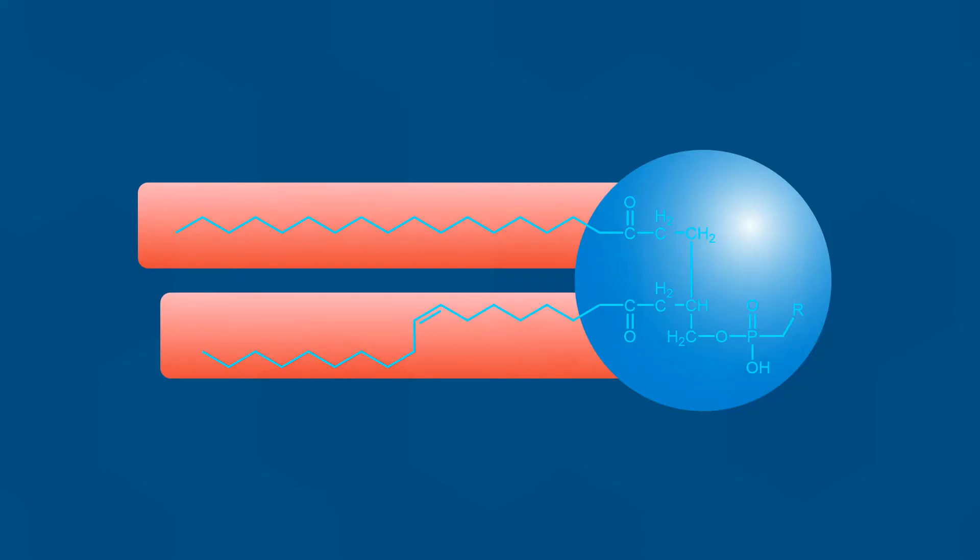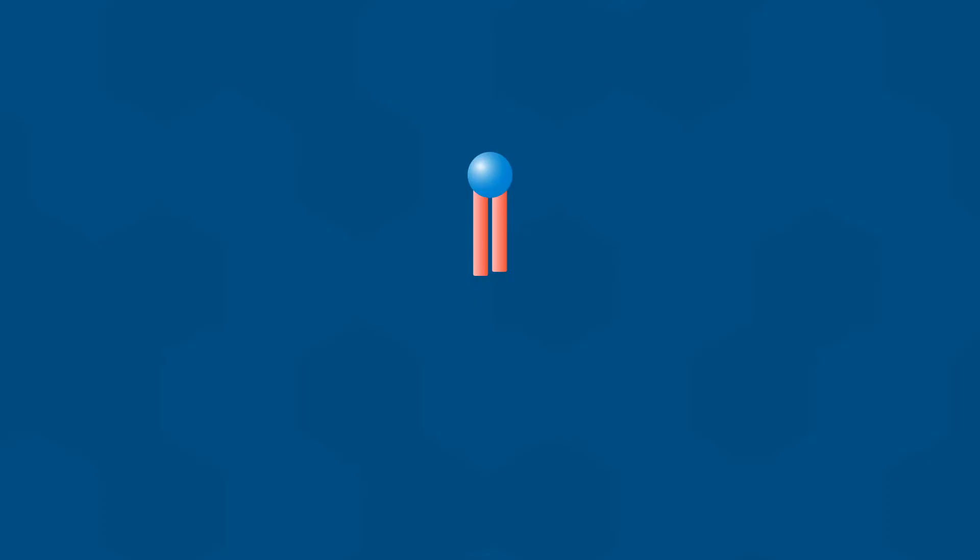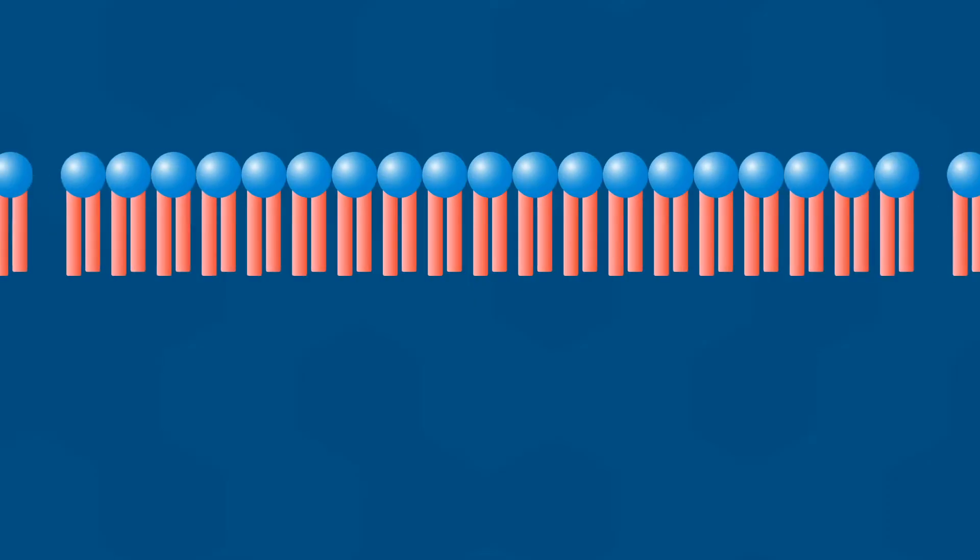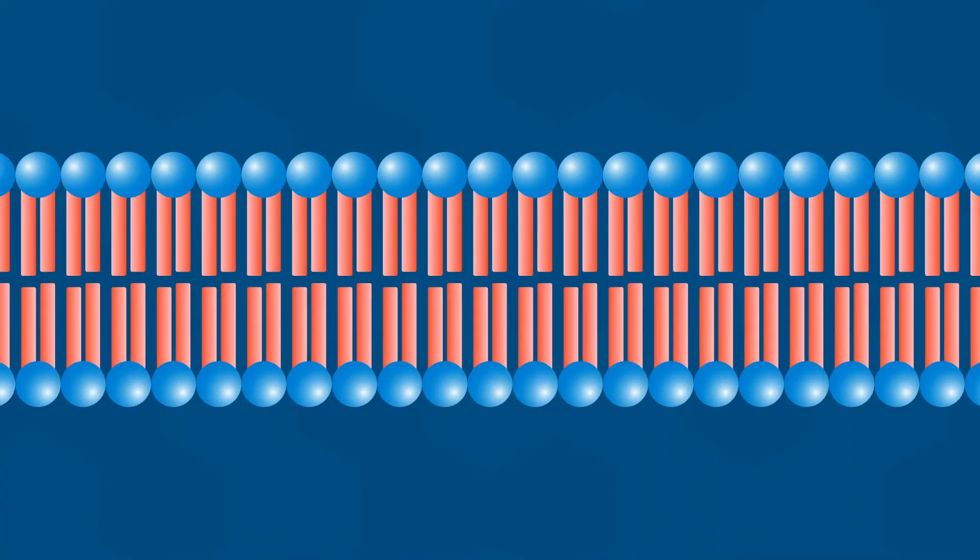One of the remarkable things about phospholipids is that when added to water, they spontaneously form bilayers, with the polar heads facing the aqueous solution and the tails sandwiched in the middle. This creates a very hydrophobic core within the bilayer. Why the phospholipids spontaneously arrange themselves into a bilayer structure is something we discussed during class.